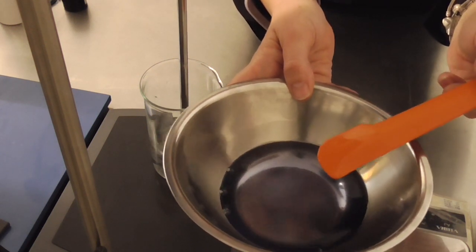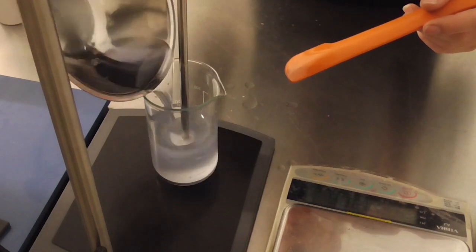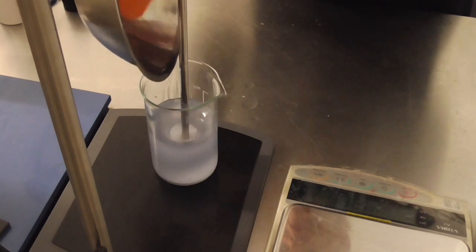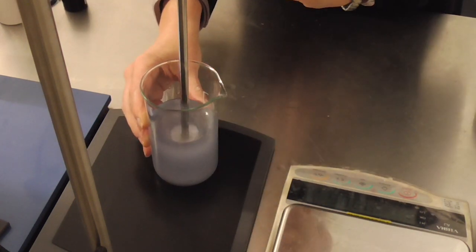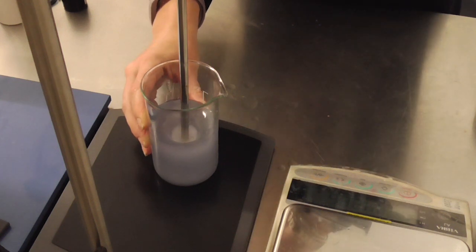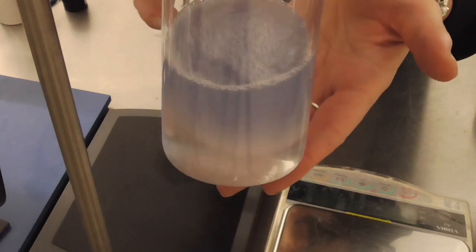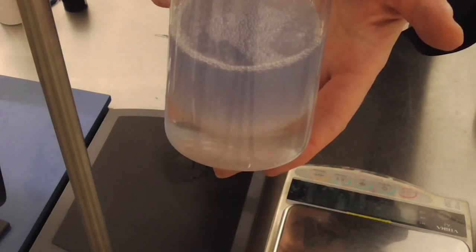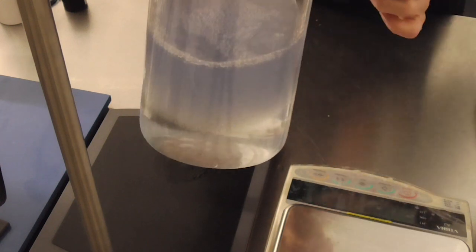So we combine the two phases and with sheer the product looks like it's come together but if we stop mixing the product will very quickly separate into its two layers that you're used to seeing.